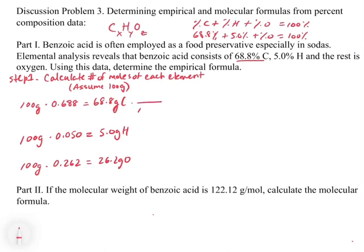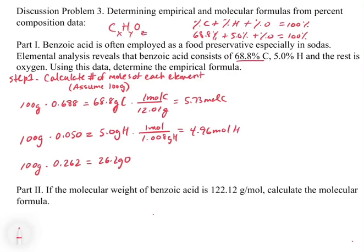Now that we have the masses, we convert to moles by dividing each by its atomic mass. Carbon: 68.8 g ÷ 12.01 g/mol = 5.73 moles. Hydrogen: 5.0 g ÷ 1.008 g/mol = 4.96 moles. Oxygen: 26.2 g ÷ 16.0 g/mol = 1.64 moles. That concludes step one — we have our moles.